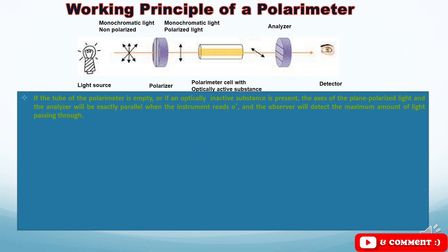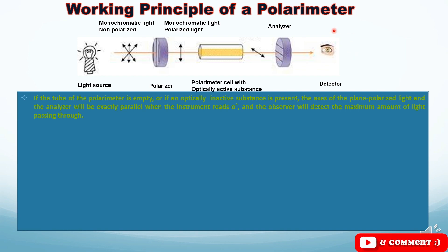What will happen if the tube of the polarimeter is empty, or if an optically inactive substance is present? Both are the same: the axis of the plane polarized light and the analyzer will be exactly parallel when the instrument reads zero degrees, and the observer will detect the maximum amount of light passing through.